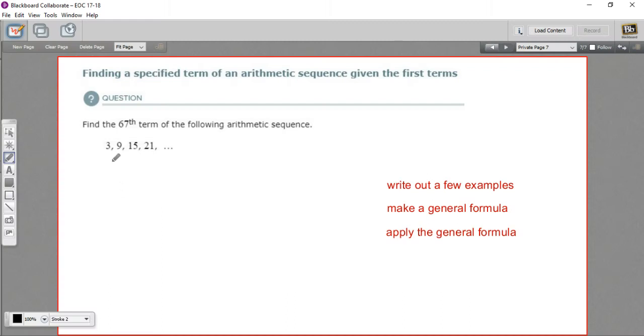In this problem, we have a sequence, at least the first four terms of a sequence. And we're supposed to find from this information here, the 67th term of this sequence.